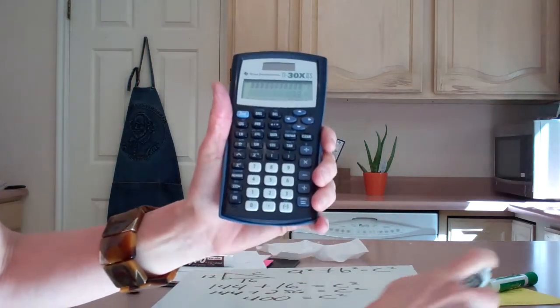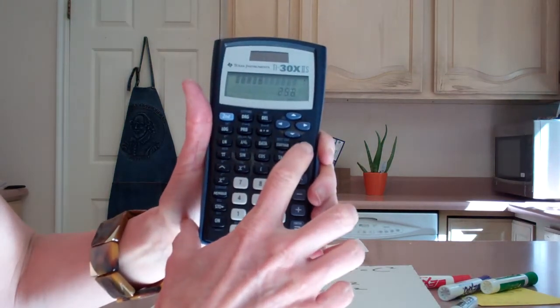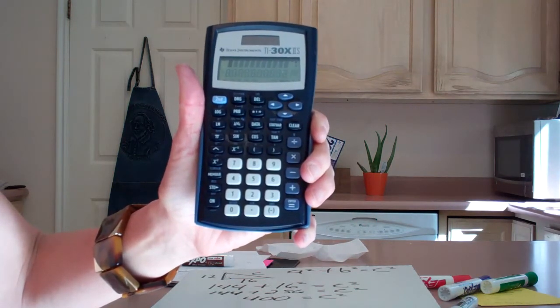We need to solve for C squared equals 400, but we want to find out what C is without it being C squared. So we'll clear that out, make sure we've got a cleared calculator. We want the square root of 400.